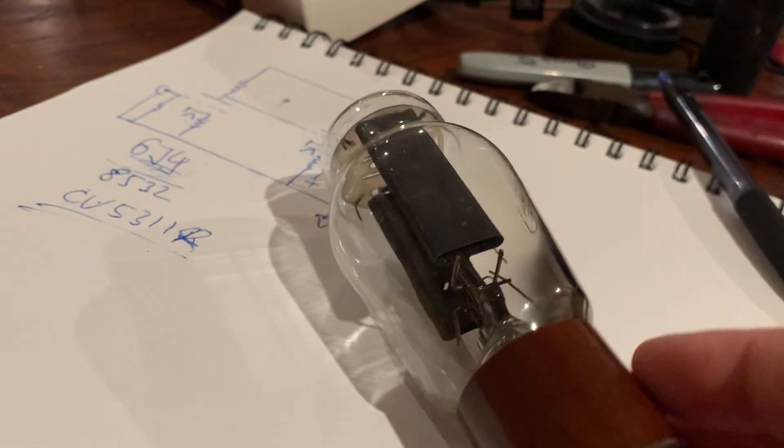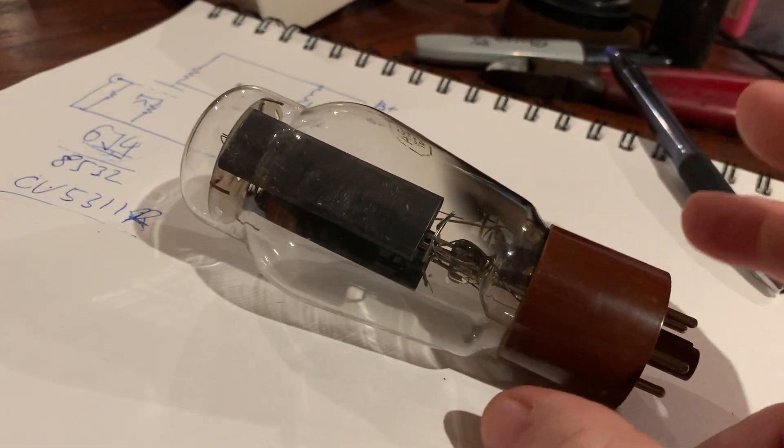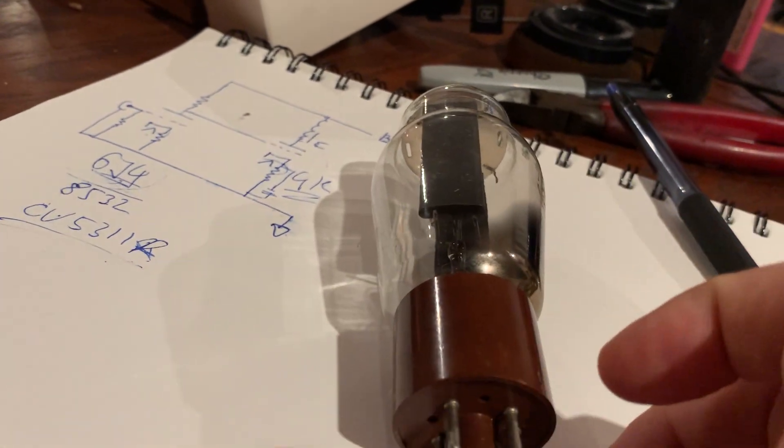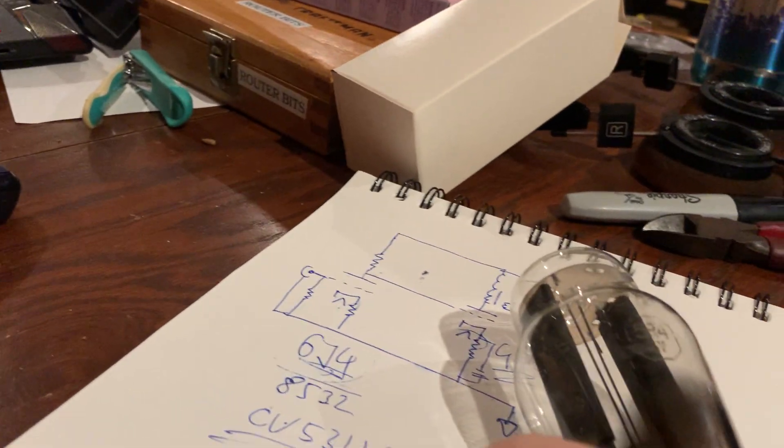As you can see this is an octal tube and when you look at the names of the rectifiers you see this is called 5R4GY.